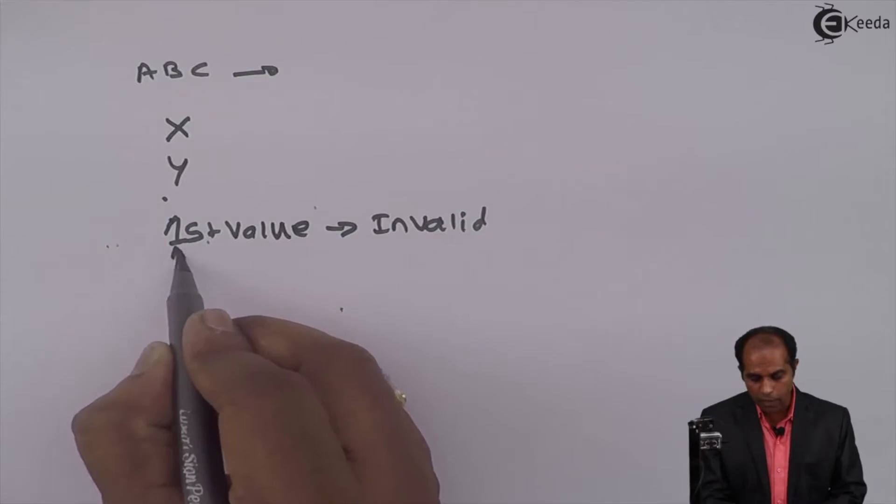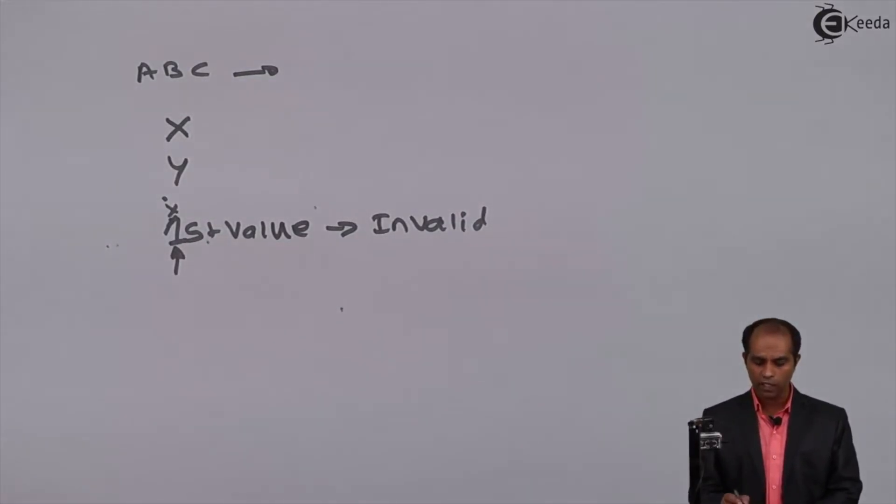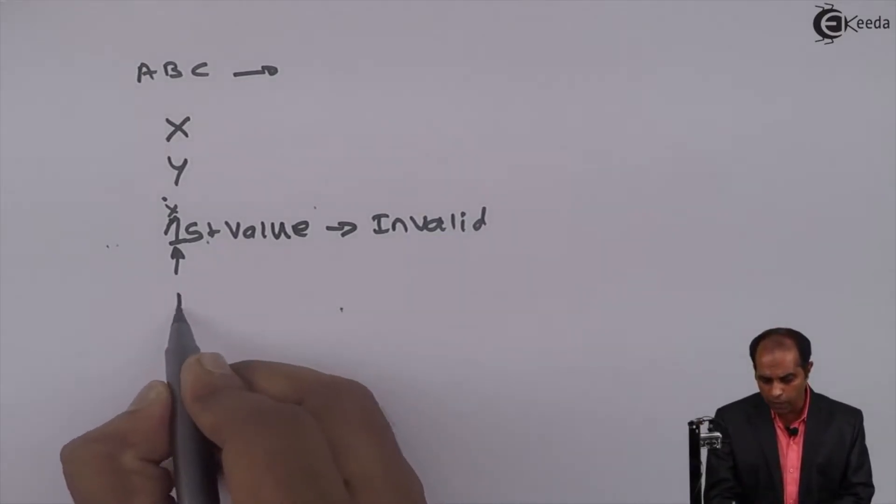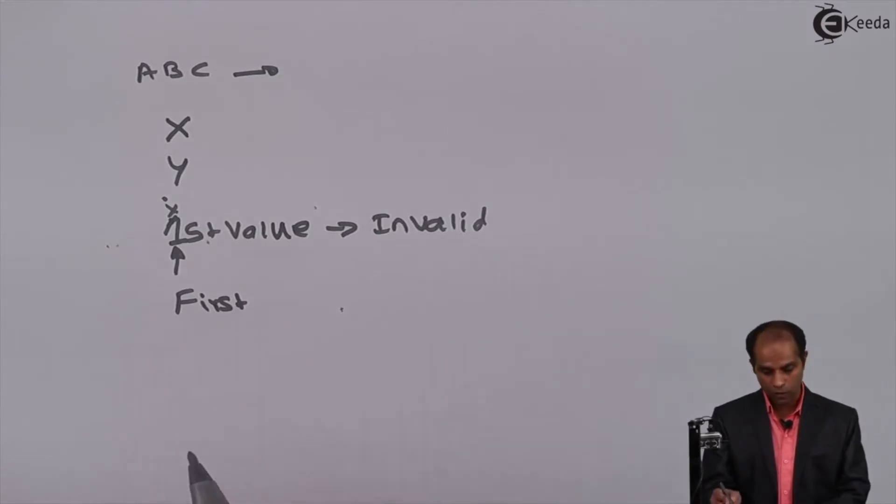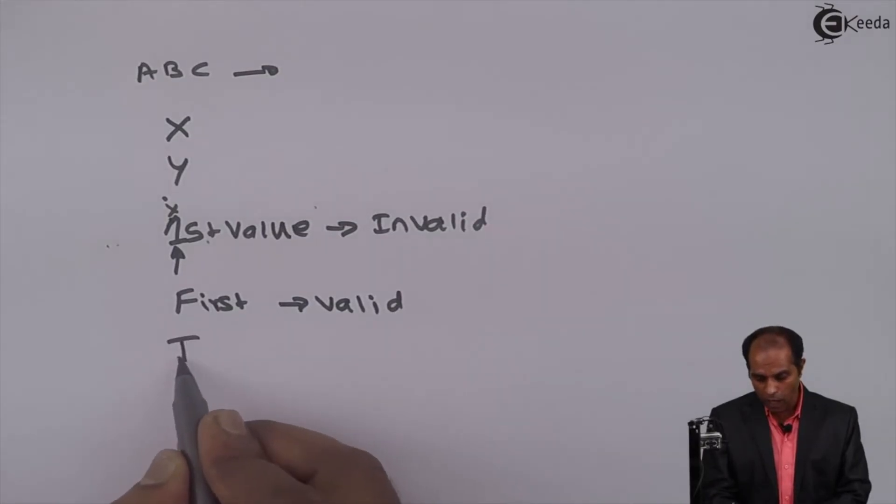I can associate various names as valid or invalid variable names. Suppose I write F-I-R-S-T, First—is it valid? Yes, it's a valid variable name. If I write I-S-T, is it valid? Yes, it is valid.